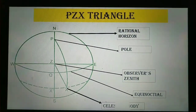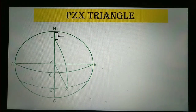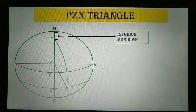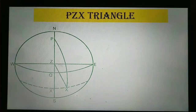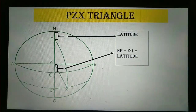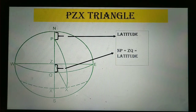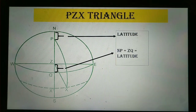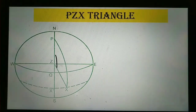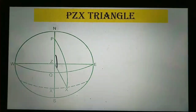X represents the celestial body. NP represents inferior meridian and PZ represents superior meridian. NP equal to ZQ represents the latitude — you can check the derivation for that separately. The angle at Z, at the zenith, is known as azimuth.